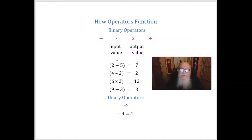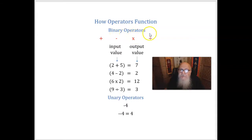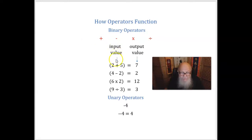Now let's get into the details of calculating truth values. Most of us are familiar with the idea of operators from mathematics. If you think about arithmetic, there are four basic operators: plus, minus, times, and division. The operators can turn two numbers into one number — the two numbers you start with are known as input values, and what you end up with is called the output value.